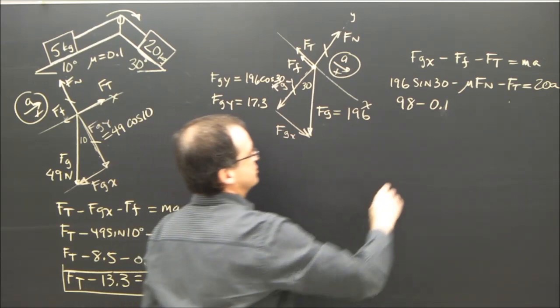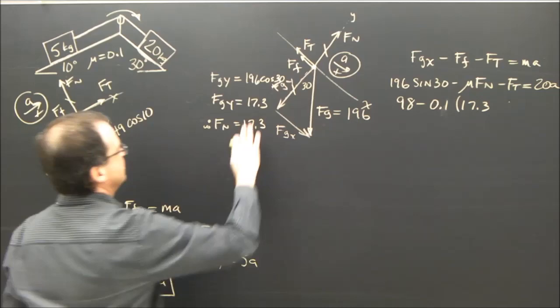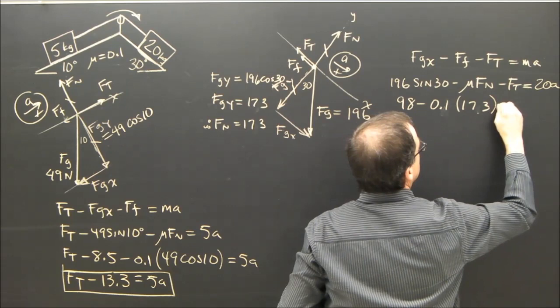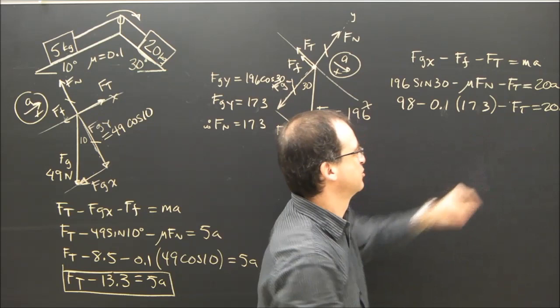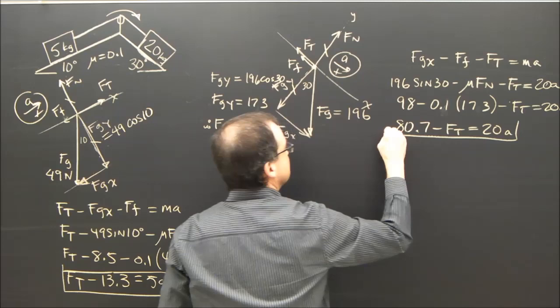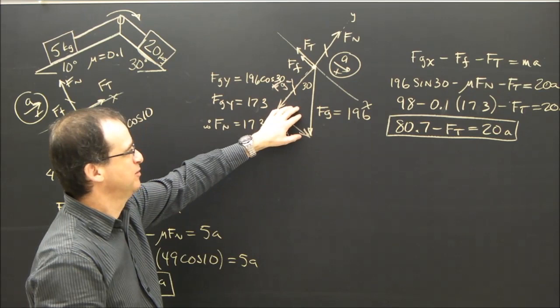Should have put a 30 there. So I know fgy. Let's go on. So it's 17.3 because fn, therefore fn equals 17.3. Sorry, 173. Screwed up. Sorry. I looked at the wrong number. 196, cosine 30 is 173. fn is 173. This should be 173. Sorry about that. Minus ft equals 20a. So I got 98. I got a number here. .1 times 173 is 17.3. Minus ft equals 20a. So I end up with a single number, and it's 80.7. Minus ft equals 20a. There's the equation that governs that one. So when you take the 198, you subtract all this, you're going to get 80.7.